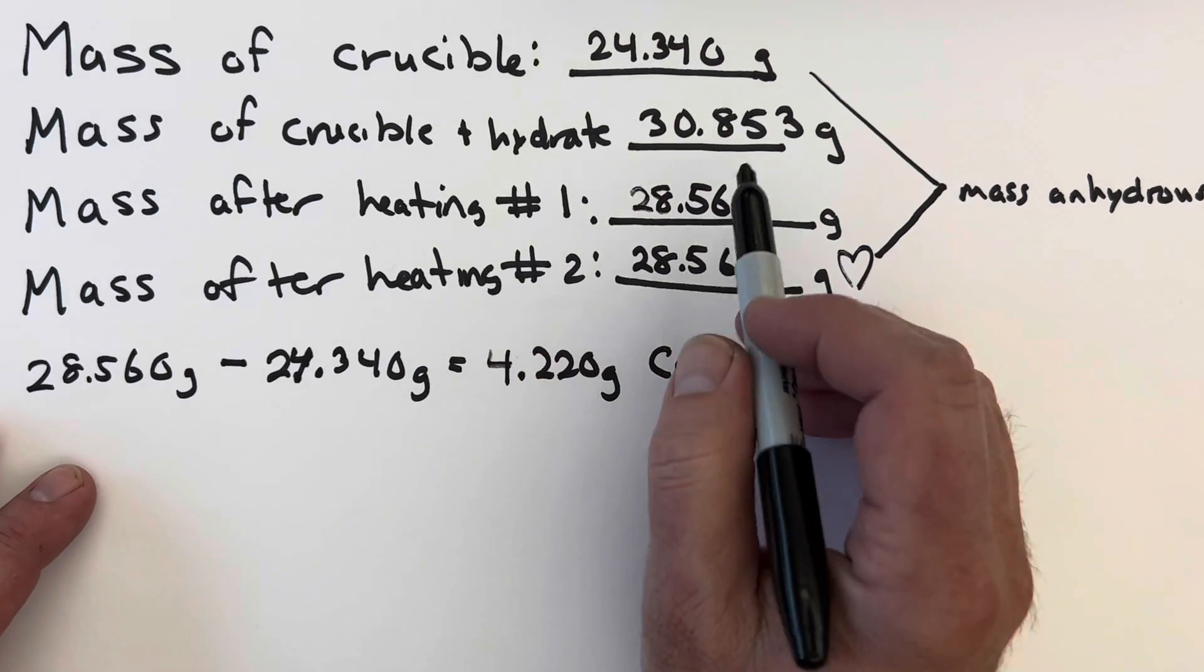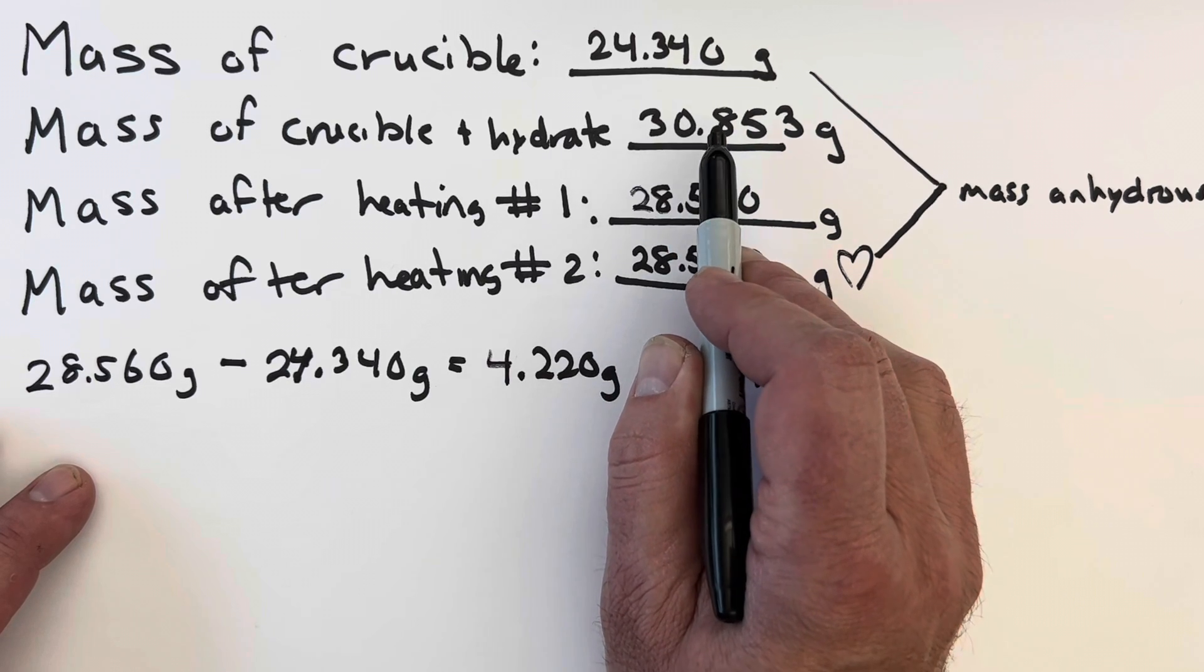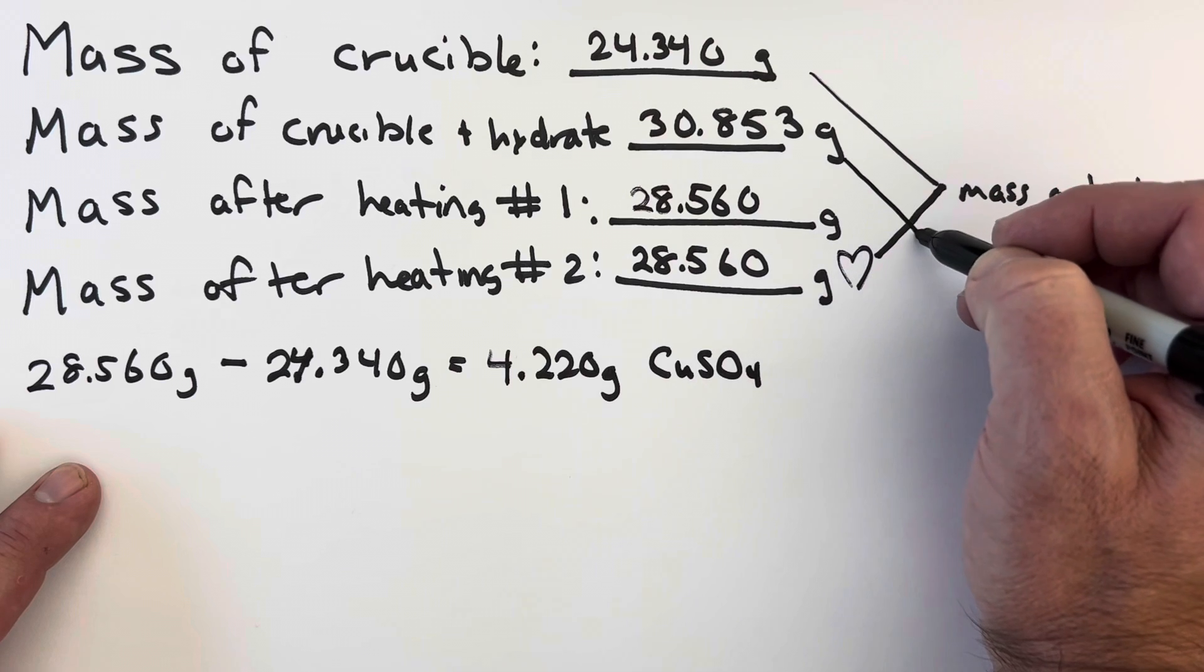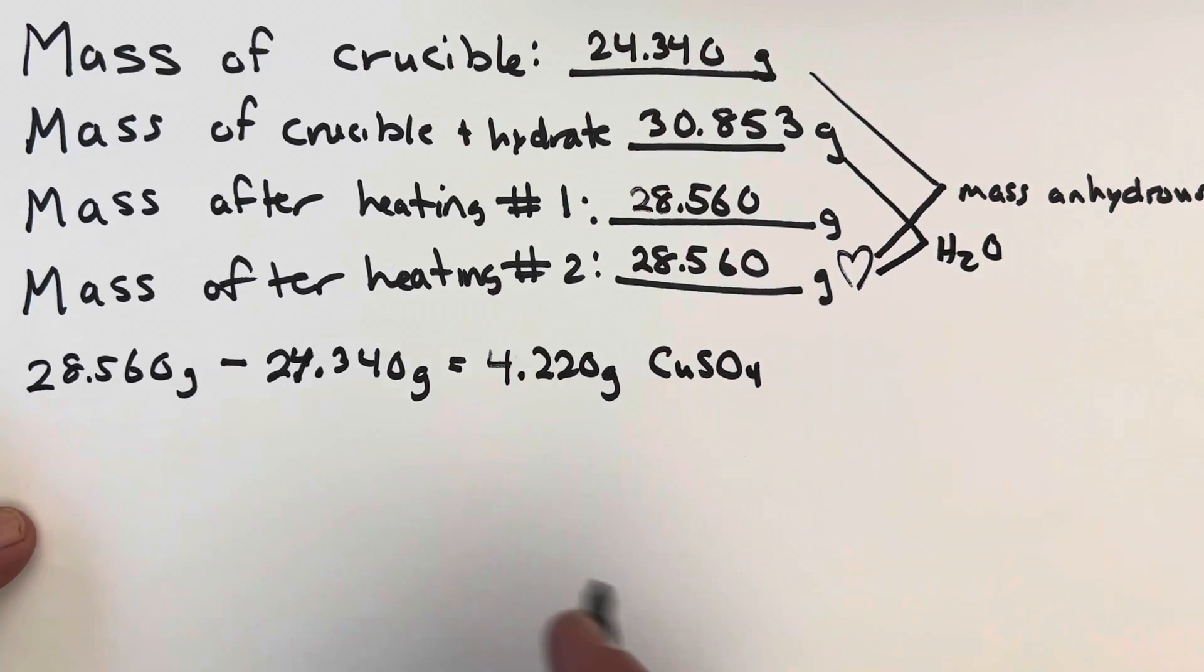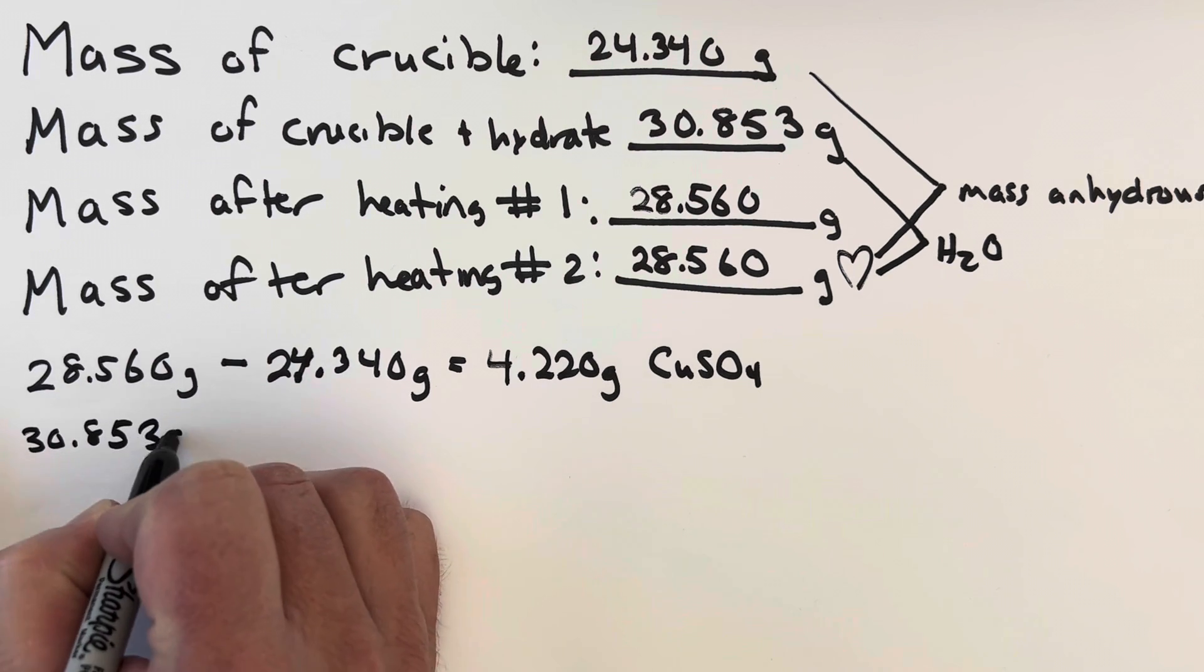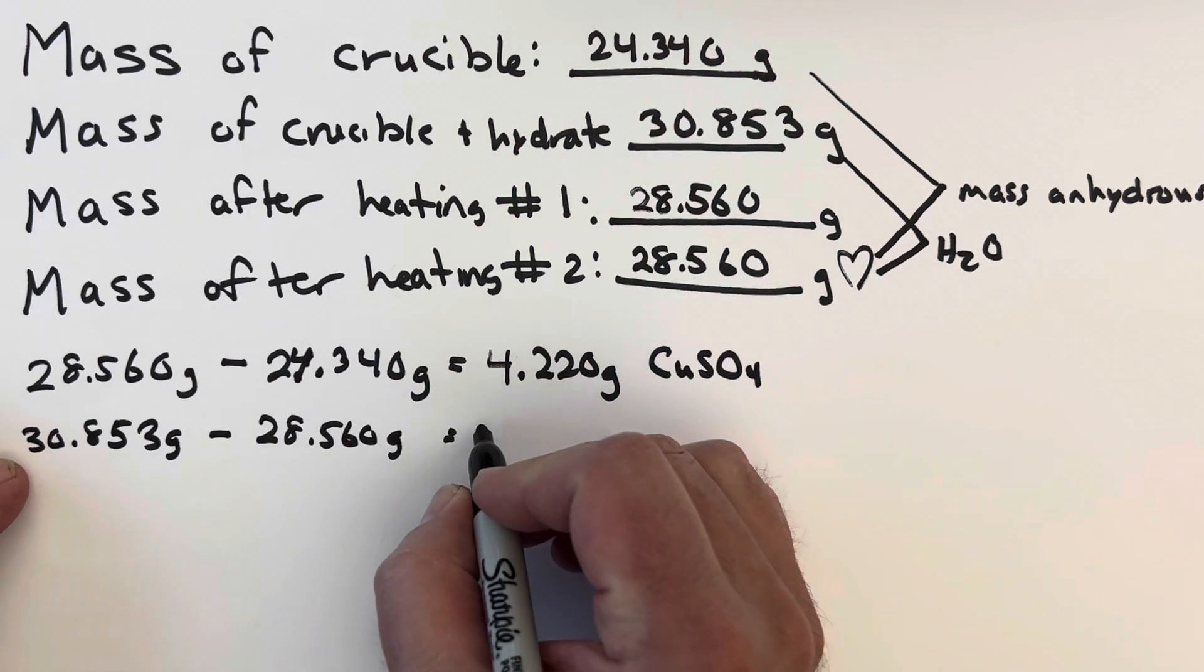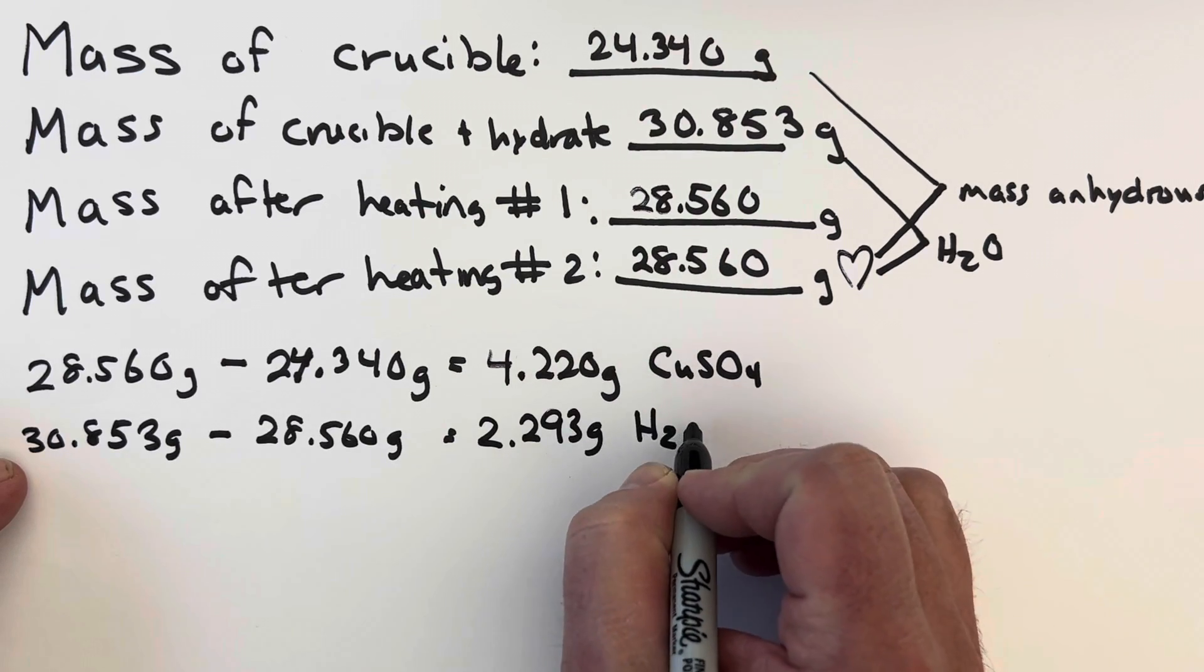Next, we need the mass of the water that escaped, and that is just the difference between what it was before heating and after your second heating. So we need to take these two to get the weight of the water: 30.853 grams minus 28.560 grams, and that gives me 2.293 grams of water.